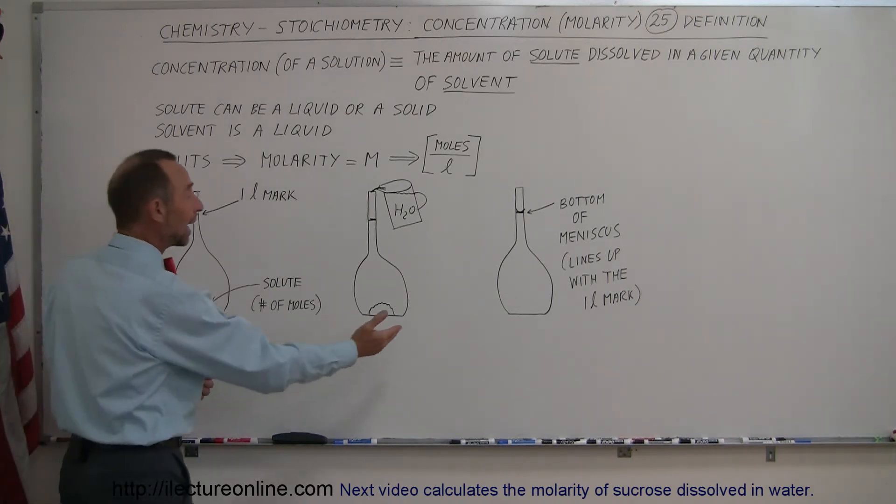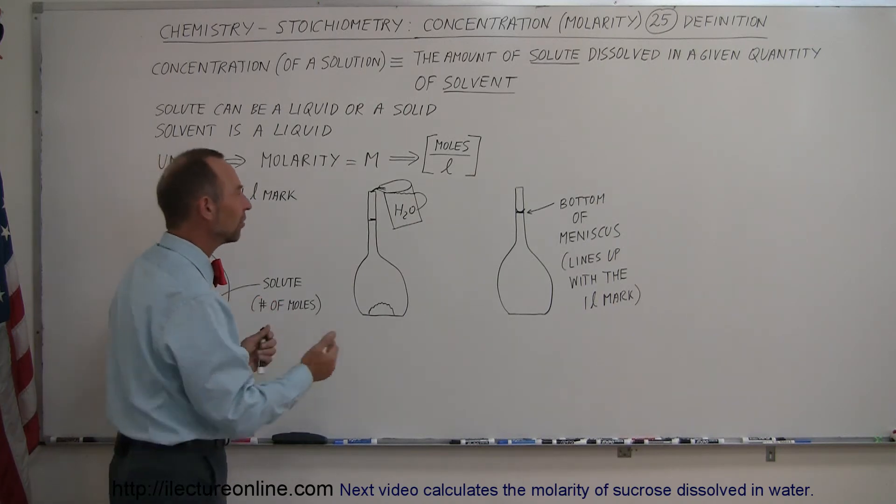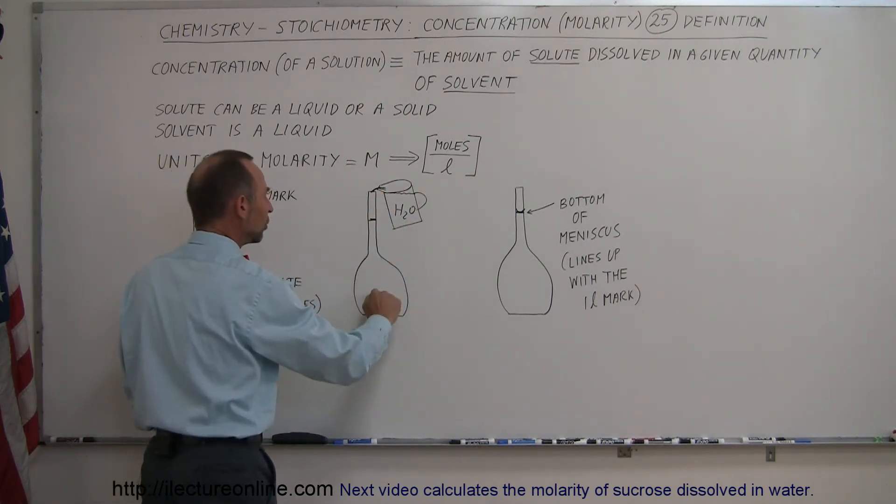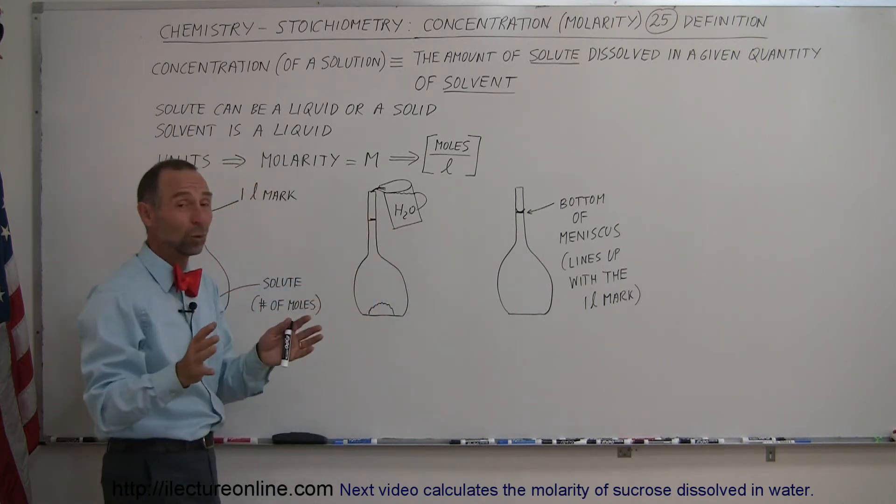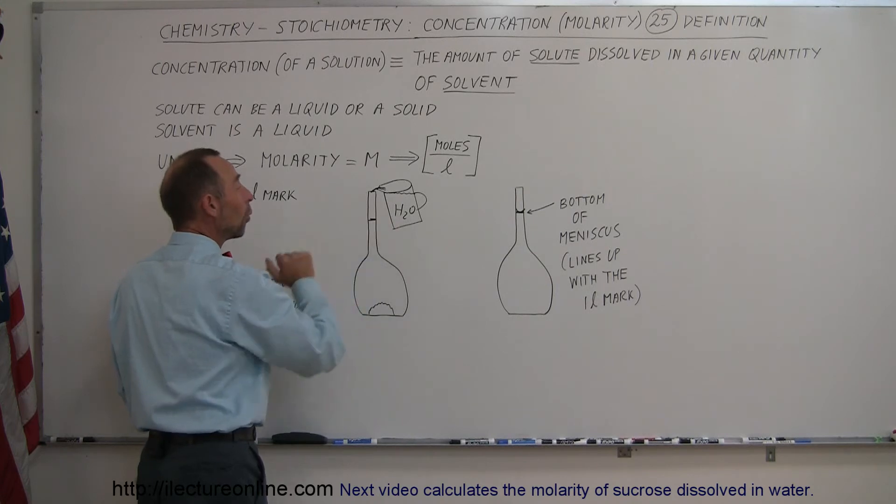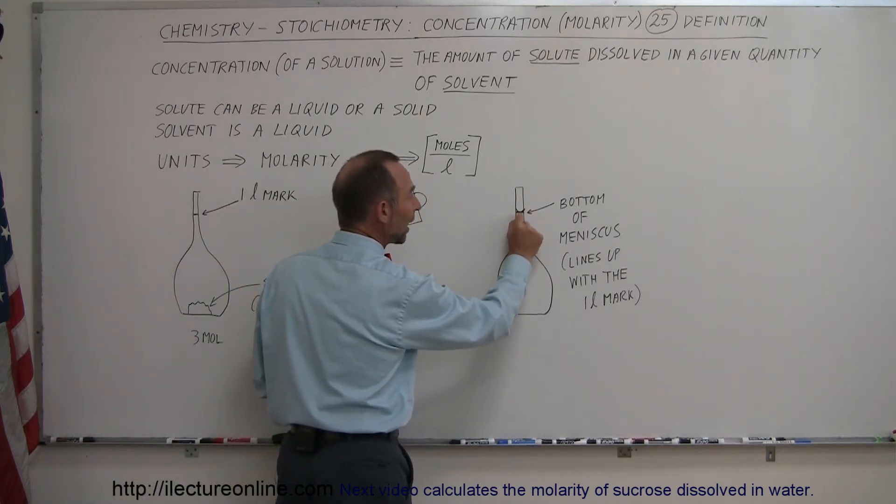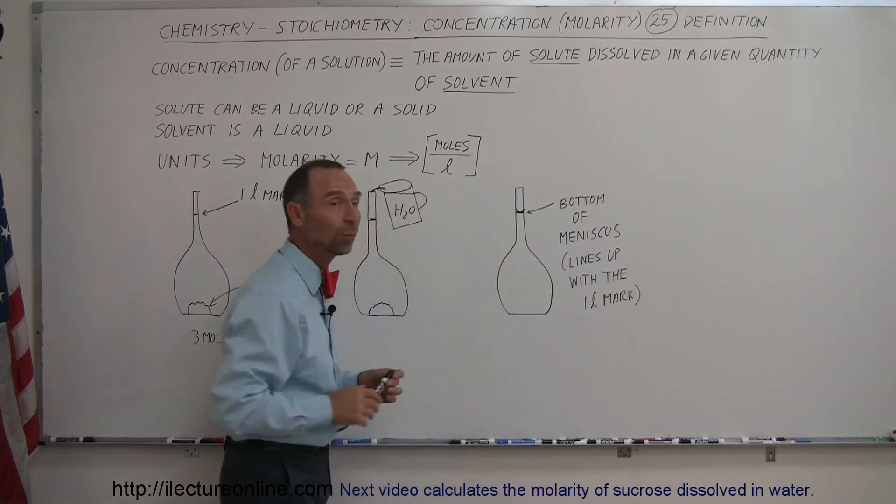Then we go ahead and add pure water. It has to be pure water because we don't want to contaminate it with anything else. And we fill up the flask until the solution reaches this one liter mark. We want to make sure that the bottom of the meniscus is right even with the mark, so that it lines up.